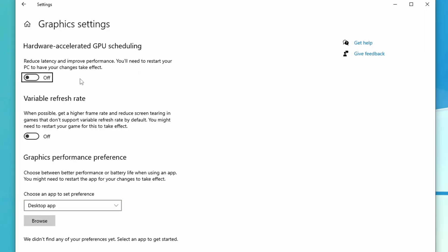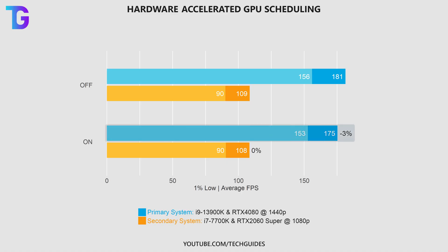Looking at the actual performance with Hardware Accelerated GPU Scheduling enabled and disabled, on my primary 1440p system I'm actually losing roughly 3.5% performance, whereas on my secondary system there is basically no measurable difference. Since some games do struggle with this enabled, I would generally recommend leaving it disabled unless you are experiencing extreme stutters.